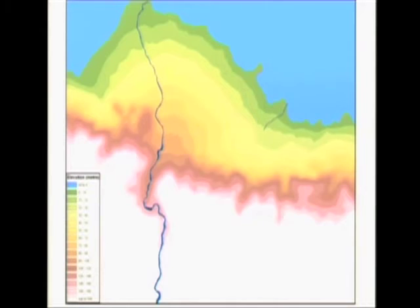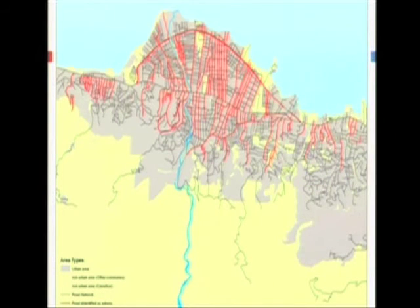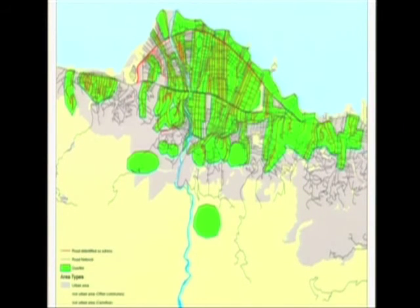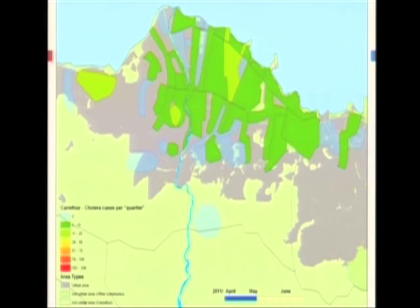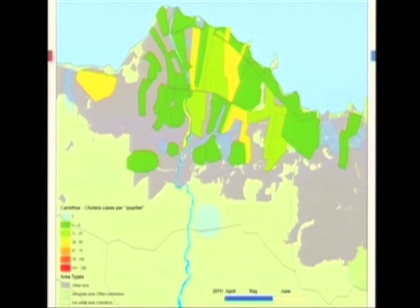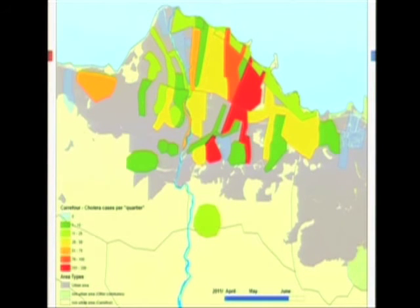We investigated elevation further and produced a contour map of Carrefour. Bertin is actually that little place here. We converted the road network and urban area into Cartiers — the deeper green shows the different Cartiers we delimited. We could then demonstrate that the cholera outbreak followed elevation northward toward the coast, and east and west from there.